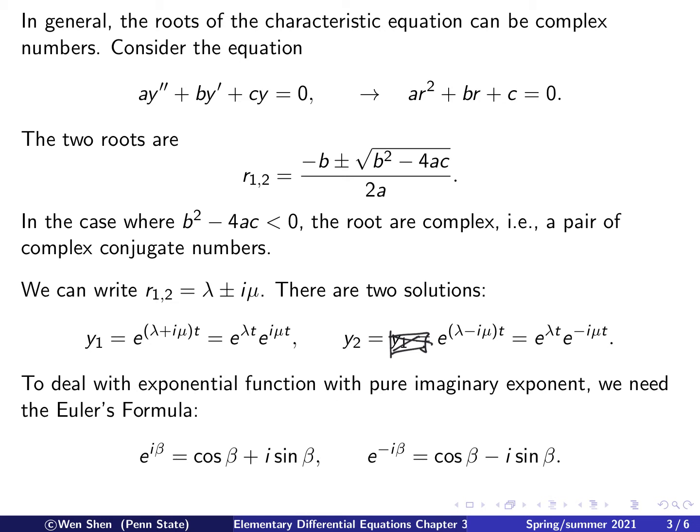The real part, the exponential function, is familiar: if lambda is positive it grows exponentially; if lambda is negative it decays. But the part with a pure imaginary number in the exponent is a new feature. To deal with that, we need to use the famous Euler's formula, which deals with an exponential function with pure imaginary power.